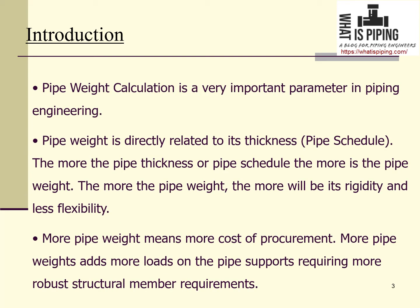Now, why is pipe weight required? Pipe weight calculation is a very important parameter in piping engineering. Pipe weight is directly related to its thickness or pipe schedule — the more the pipe thickness or schedule, the more the pipe weight, and the more the weight, the more the rigidity and the less the flexibility. Pipe weight therefore plays an important role in stress analysis, as it affects the rigidity or flexibility of the pipe.